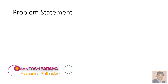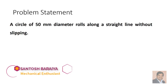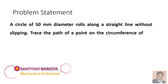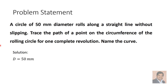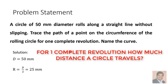The problem statement: a circle of 50 mm diameter rolls along a straight line without slipping. Trace the path of a point on the circumference of the rolling circle for one complete revolution and name the curve. Since the circle is rolling over a straight line without slipping, this will be a cycloidal problem. The diameter of the rolling circle is 50 mm, so the radius will be 25 mm.